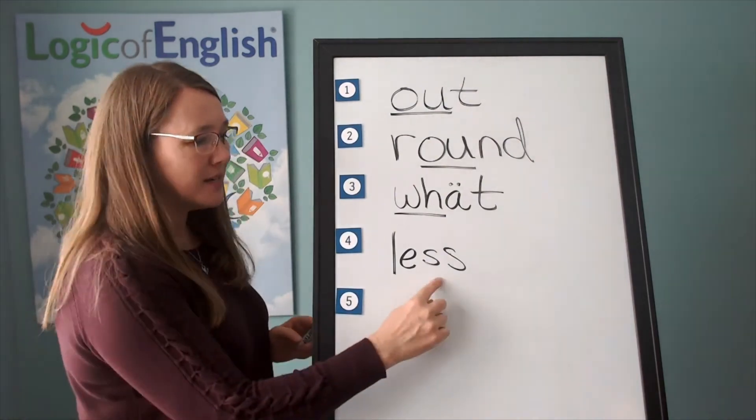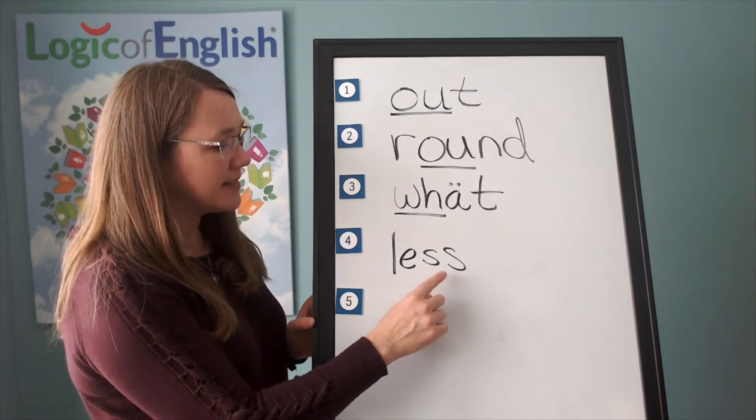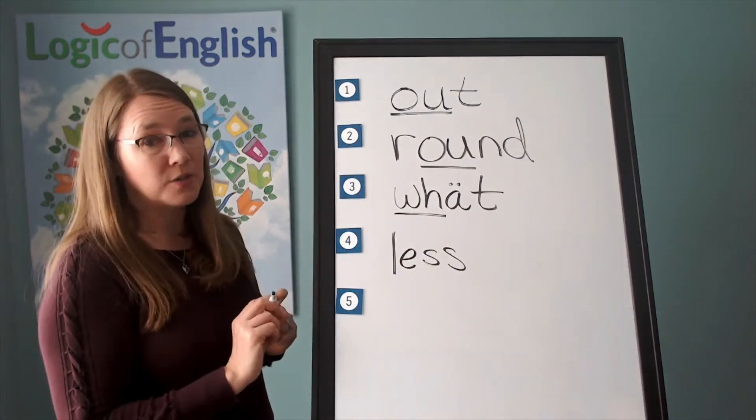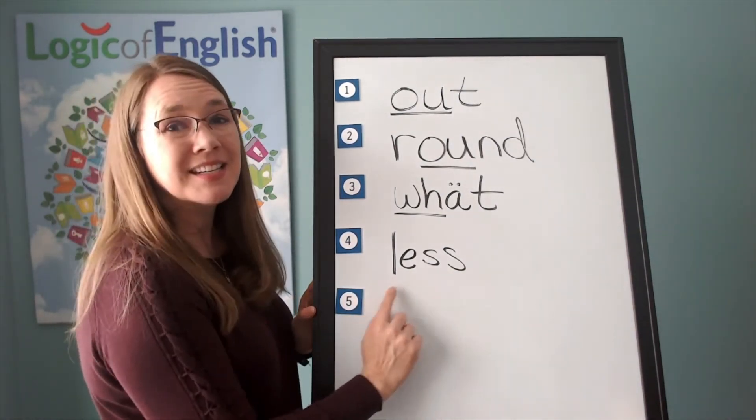And why did we double the s? That's right. We often double f, l, or s after a single vowel at the end of a base word. And let's sound it out. L, eh, s, s. Less.